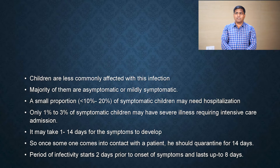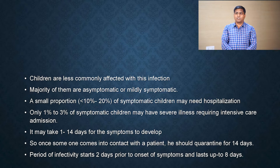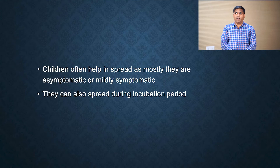It takes almost 1 to 14 days for symptoms to develop after the infection is contracted. So when someone is exposed to an infected person, the quarantine should be up to 14 days. The period of infectivity starts 2 days prior to onset of symptoms and lasts up to 8 days post-development of symptoms. Children often help in spread as most of them are asymptomatic or mildly symptomatic and are not recognized as a source of infection.